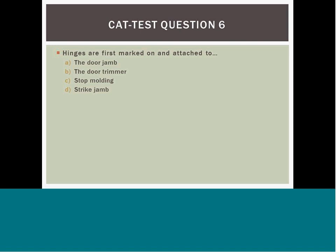Question 6: A door jamb saw is used on A) the door jamb, B) the door trimmer, C) stop molding, or D) strike jamb. Answer A is the best answer. The door jamb saw is a power tool that cuts down the overall height of a wood door opening. Stop molding is not appropriate and would not allow for a door to operate correctly. The strike jamb is the opposite side of the door jamb and allows for the door hardware to operate correctly. The facility staff member may have to cut out mortises for the hinge location, and the door is fitted properly to the opening because the jamb is stationary but the door can be adjusted.